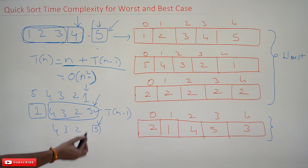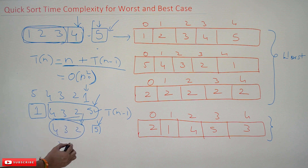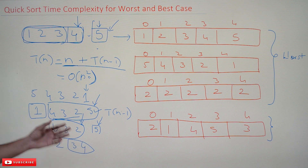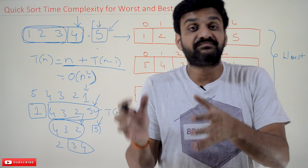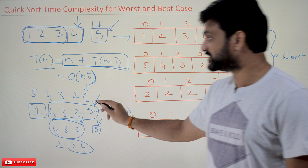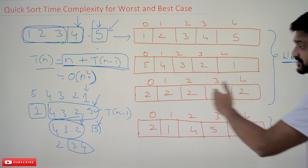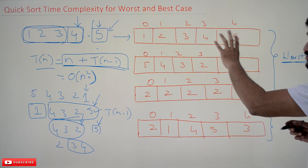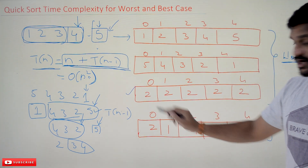Applying partition again on the descending sub-array: 2 comes to its position, 3 and 4 get rearranged. Again it is T(n−1). Every time the partition algorithm takes O(n) time and the division gives T(n−1), so the recurrence is T(n) = T(n−1) + n — the same equation as before. All three cases — sorted order, descending order, and all elements equal — are worst cases for quicksort.